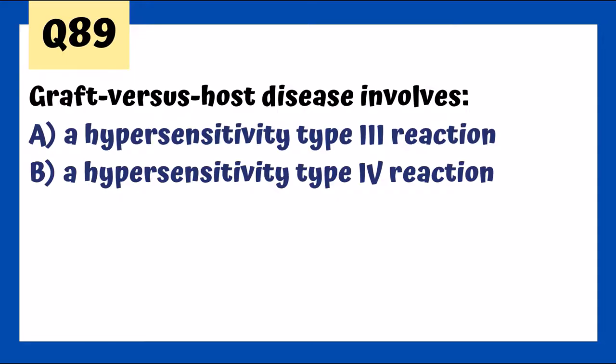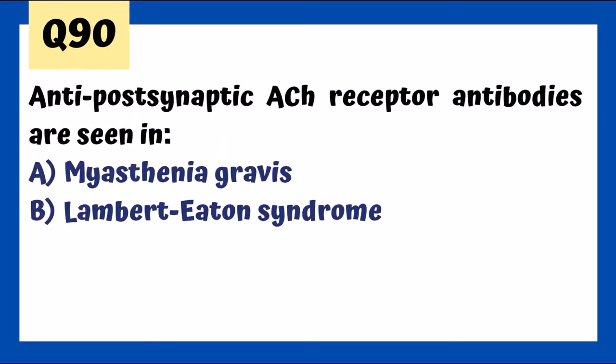Graft-versus-host disease involves hypersensitivity type 4 — a classic type 4 reaction. Anti-postsynaptic acetylcholine receptor antibodies are seen in myasthenia gravis. Lambert-Eaton syndrome involves presynaptic calcium channels.